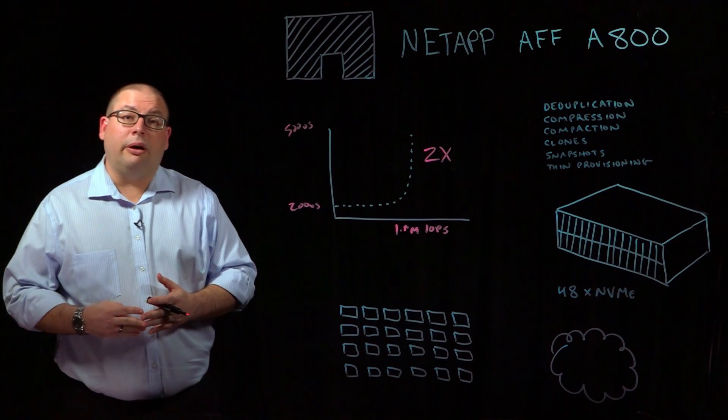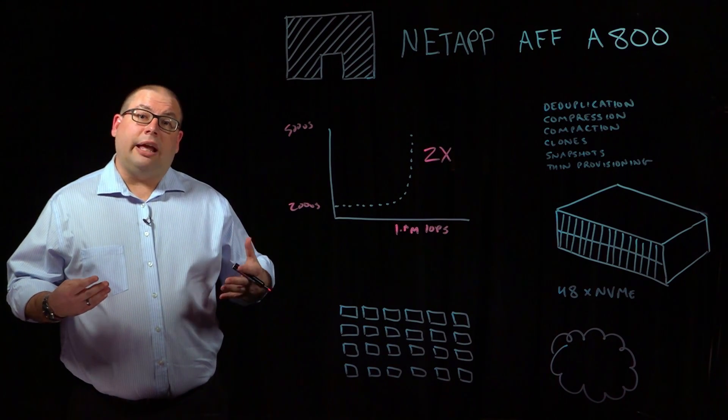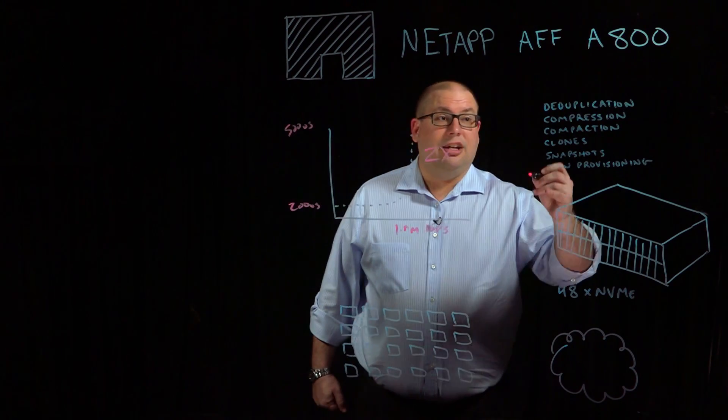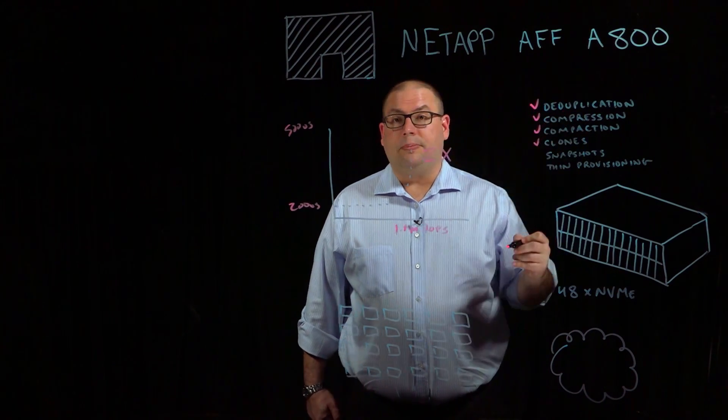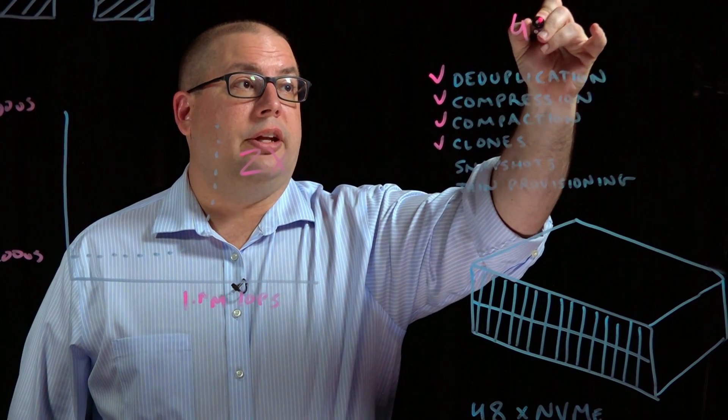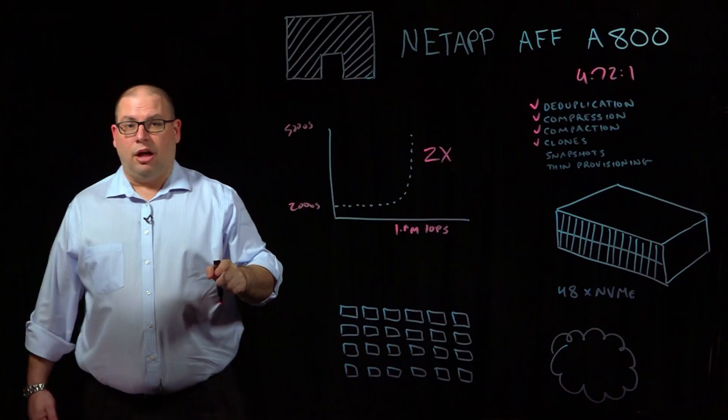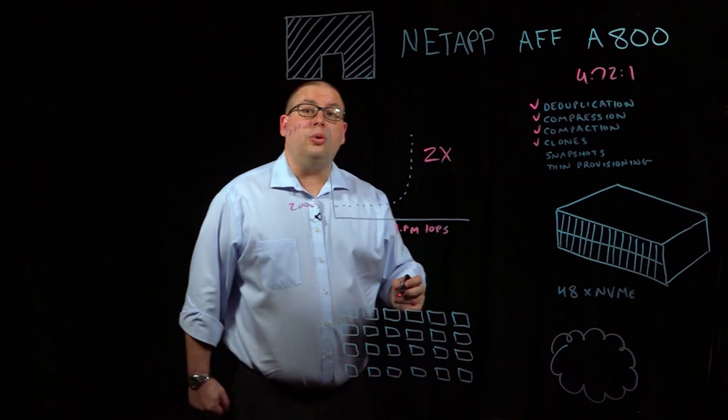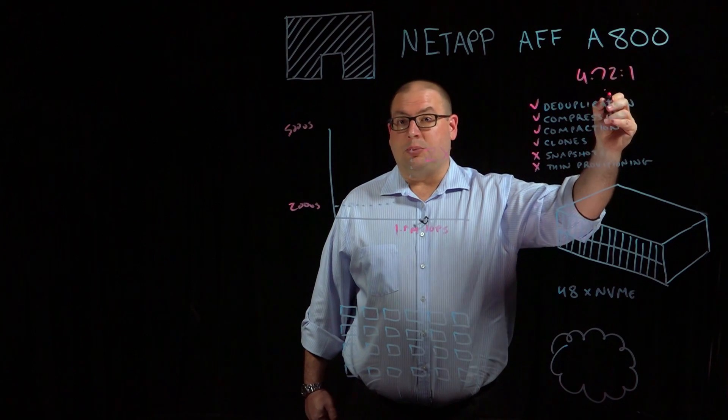Now the important thing to know about our phenomenal performance of the A800 is this is always delivered with inline storage efficiency enabled. The A800 uses deduplication, compression, compaction and clones to achieve an average of 4.72 to 1 data reduction. So almost 5 copies of logical data can get shrunk down into 1 copy of physical data. We do not use snapshots or thin provisioning in calculating this ratio.